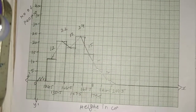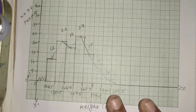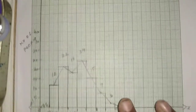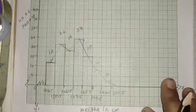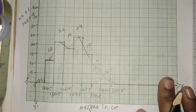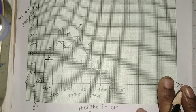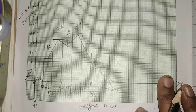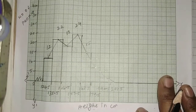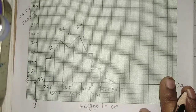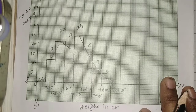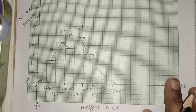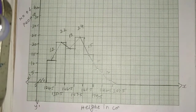Now we have completed using the histogram method. Next time we will see how to draw the frequency polygon without using the histogram — that model is a bit different. So please listen carefully and solve. Clear? Thank you.